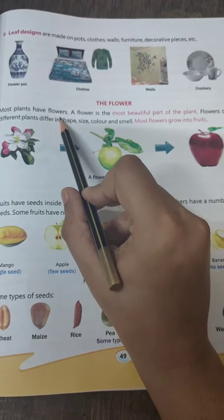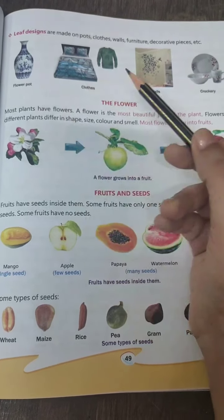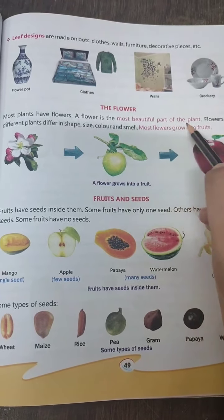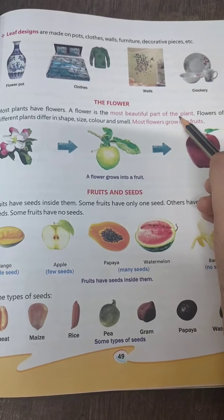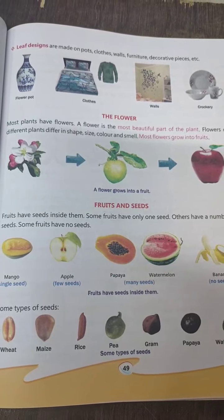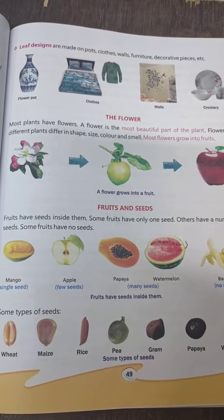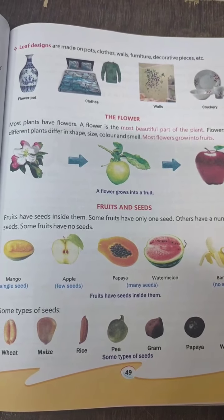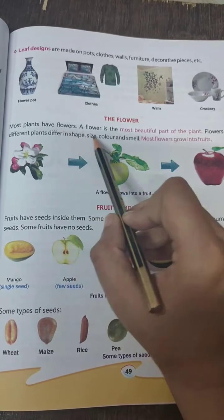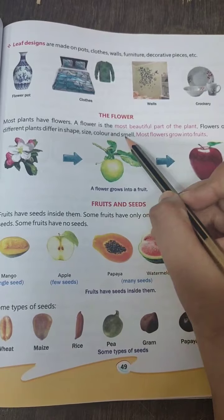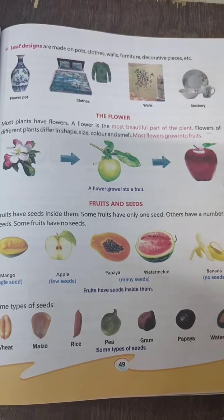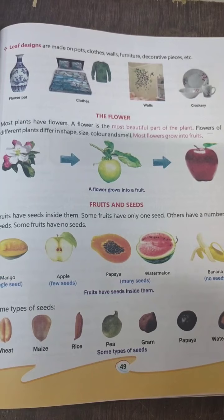Most plants have flowers. A flower is the most beautiful part of the plant. Flowers come in different shapes, sizes, colors, and smells, such as roses, marigolds, and sunflowers.